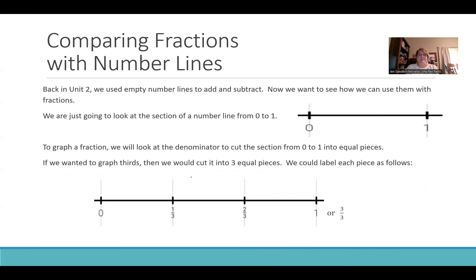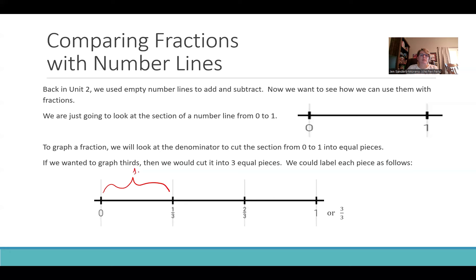The other technique I want to show you is number lines. We're going to start with a number line from zero to one — one, because we're talking about one object, one unit, one whole part that we're chopping up. This is nice because it gets students to think about what size looks like based on a ruler. If we wanted to graph thirds, we'd put our number line into three equal pieces — three spaces. So we have zero, which is zero-thirds, then one-third, two-thirds, and one, which is three-thirds.